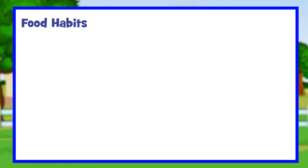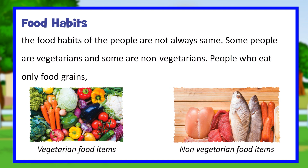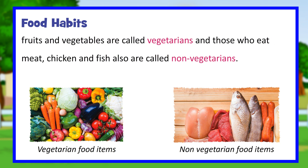Food habits. The food habits of the people are not always the same. Some people are vegetarians and some are non-vegetarians. People who eat only food grains, fruits and vegetables are called vegetarians, and those who eat meat, chicken, and fish also are called non-vegetarians.